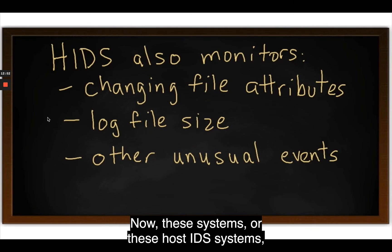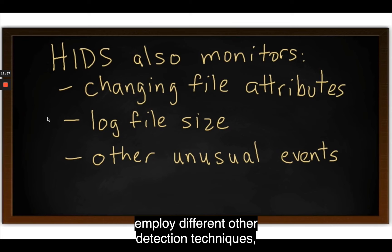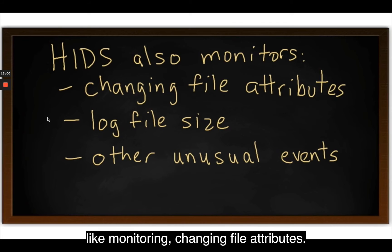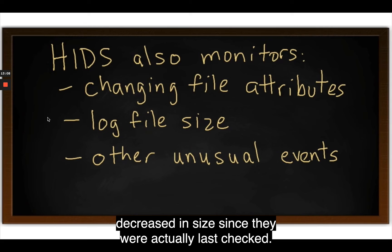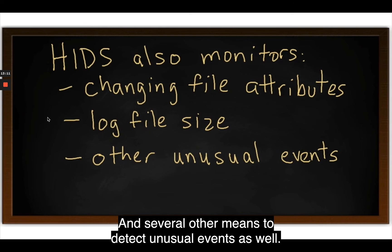A host intrusion detection system uses a database called an object database — a system of objects that it should actually monitor. Usually, file system objects are included in that database. A host IDS could also check that appropriate regions of memory have not been modified by an attacker or malware. Computer systems generally have many dynamic and frequently changing objects which intruders want to modify, and this is what a host IDS should monitor. Detection techniques include monitoring changing file attributes and monitoring log files that have decreased in size since they were last checked.